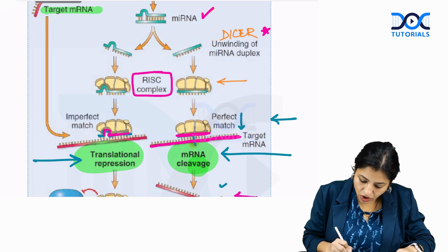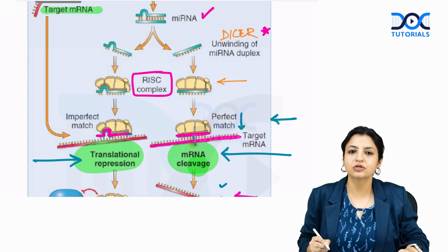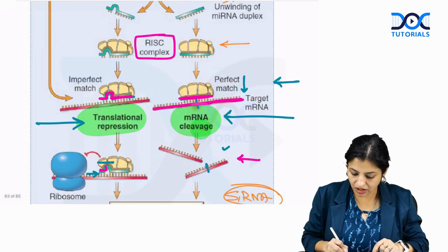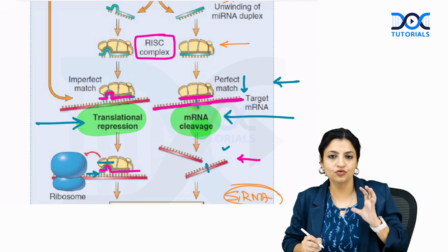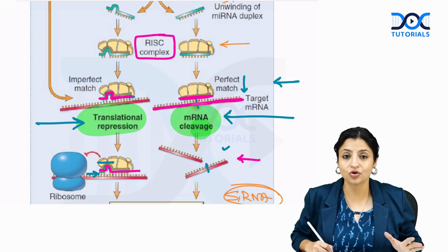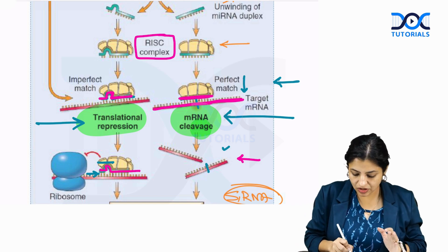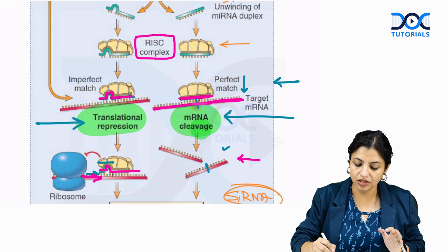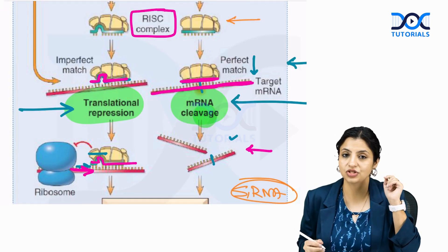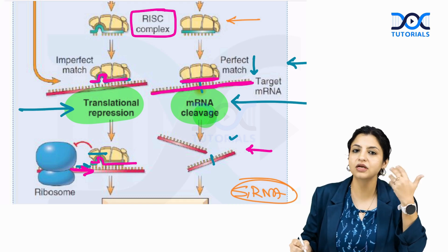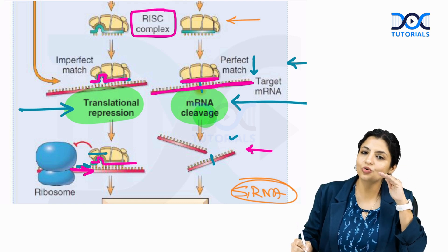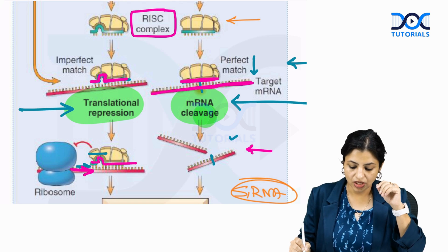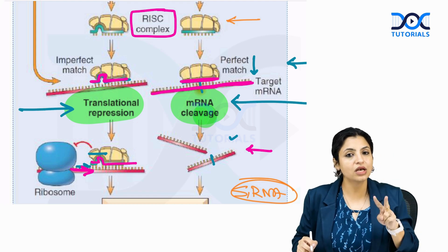The second situation is that the microRNA is not a perfect match to the target mRNA. In that case it will sit in front of the ribosomes like a stool — ribosomes come to make protein but the microRNA with its RISC complex won't move. The ribosomes cannot move forward to make the protein, causing translation repression.